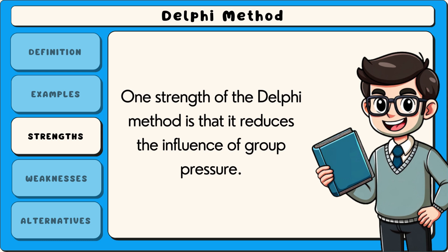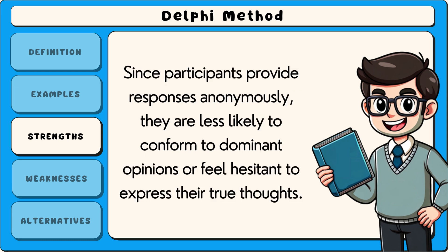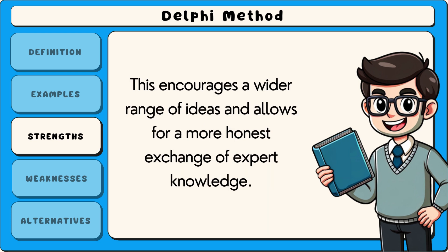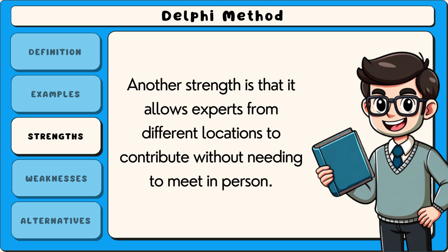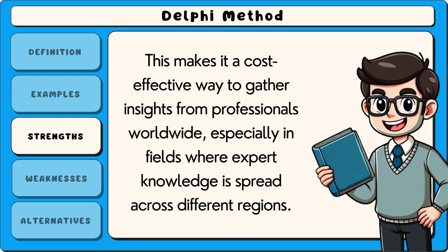One strength of the Delphi method is that it reduces the influence of group pressure. Since participants provide responses anonymously, they are less likely to conform to dominant opinions or feel hesitant to express their true thoughts. This encourages a wider range of ideas and allows for a more honest exchange of expert knowledge. Another strength is that it allows experts from different locations to contribute without needing to meet in person, making it a cost-effective way to gather insights from professionals worldwide, especially in fields where expert knowledge is spread across different regions.